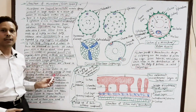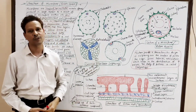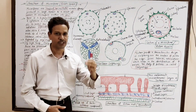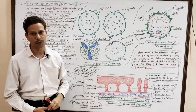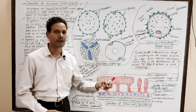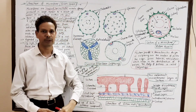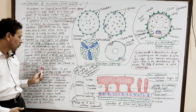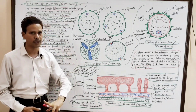Pollen banks: in pollen banks, pollens are preserved. The pollens are stored in liquid nitrogen at minus 196 degrees Celsius.